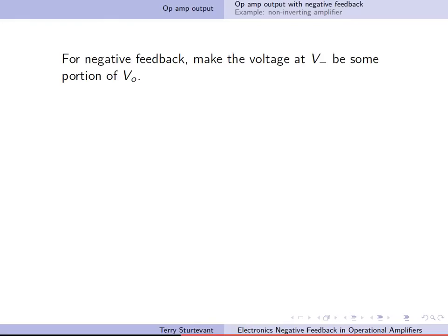For negative feedback, the voltage at V minus is made to be some proportion of V out. The ratio of V minus to V out is called the feedback factor beta.